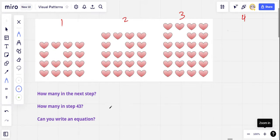And if you can do that, how many in step 43? A little more difficult to figure out. And then along the way, if you can write an equation that you could use to predict the number of hearts in any step of the pattern at all. So that's the challenge. If you'd like to take it, hit pause and give it a try.